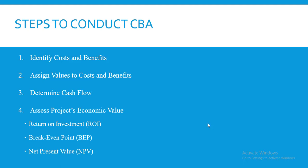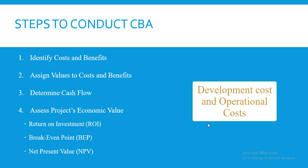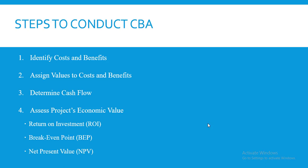Costs are normally divided into two categories. First, we have development costs — these are costs incurred during the building of the system, also referred to as one-off costs. Second, we have operational costs — these are costs incurred when the system is being used, such as maintenance costs and salaries for support staff.